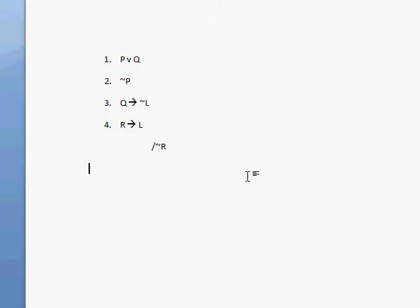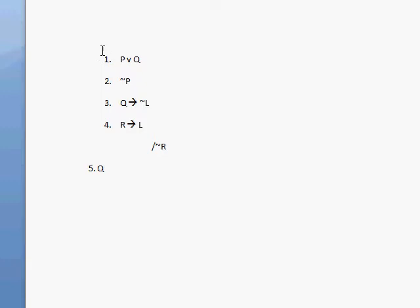So how do we get started? Well, we have our four rules, so let's see what we can identify. I see P or Q and not P, so that looks like disjunctive syllogism. We have Q then not L, and R then L. I'll have to get started with disjunctive syllogism first. On line 5, we know it's P or Q — either P or Q — and it's not P, so therefore we get Q.